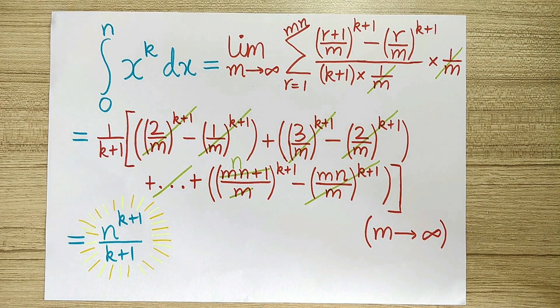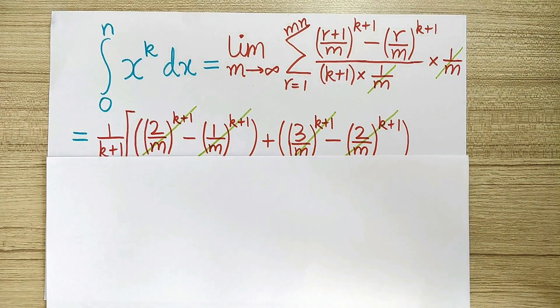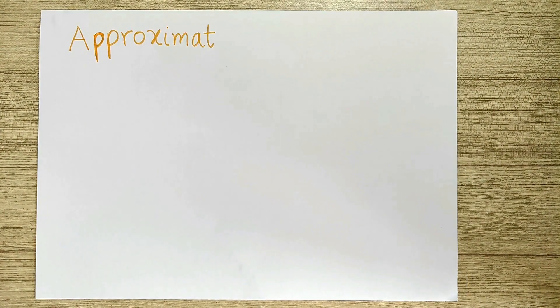Now the natural next question to ask is whether this telescoping trick which is meant for a continuous sum works for a discrete sum as well. To start off, let's look at an approximate version.